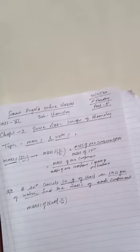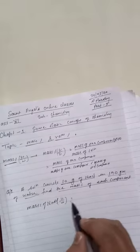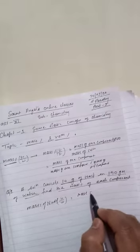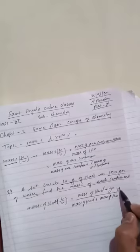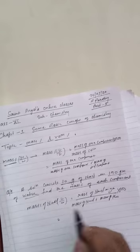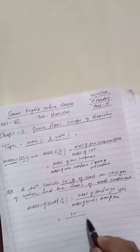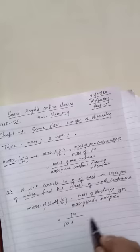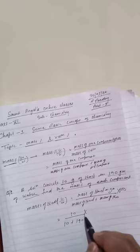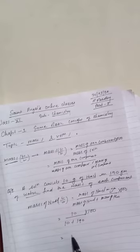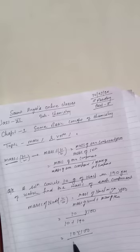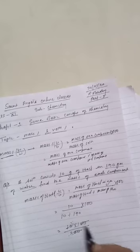Since both components are in grams, this is W by W. Mass percentage of NaCl (W by W) equals mass of NaCl in grams upon (mass of NaCl plus mass of water), multiplied by 100. Putting in the values: 10 upon (10 plus 190), multiplied by 100 — that is 10 into 100 upon 200.